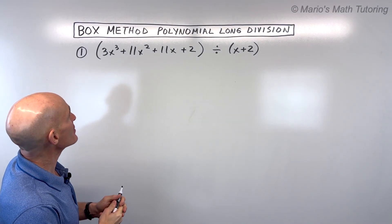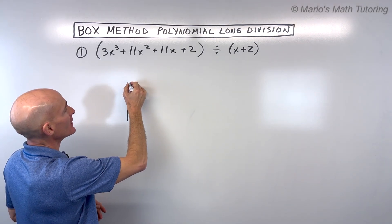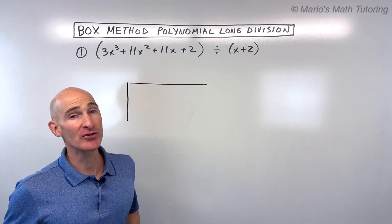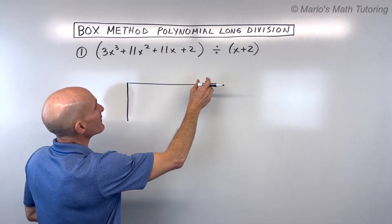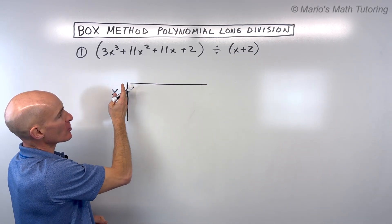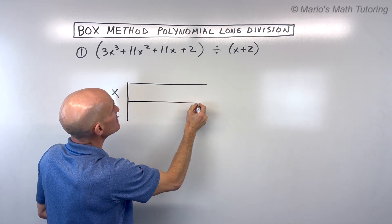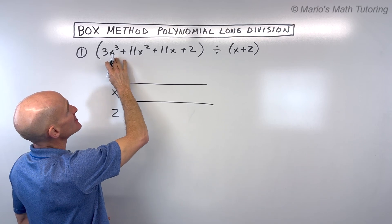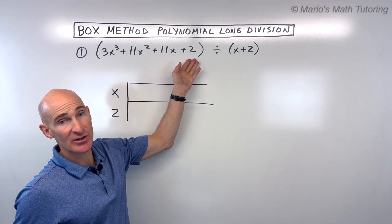The key here is you want to set up this as a box. I'm going to show you some of the backstory behind this, and we're going to go through four examples so you can get some experience and practice with it. So what you do is you say I'm dividing by x plus 2 — we're going to put x and positive 2 right here along one side of the box.